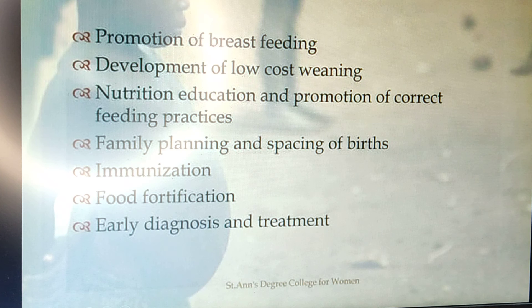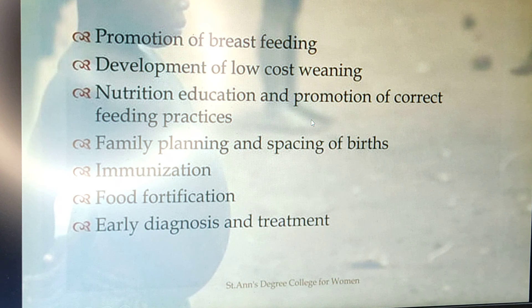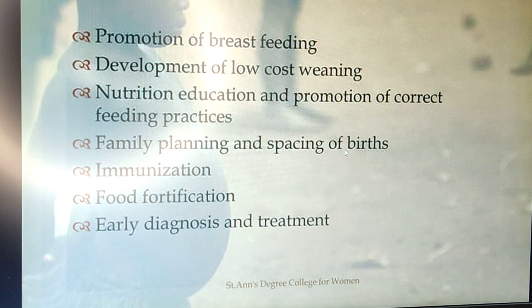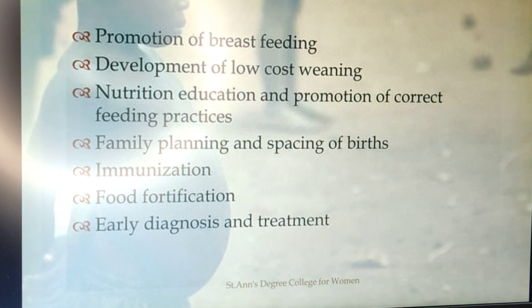The weaning diet should be low-cost, using food items available at home, which also provides good nutrition. Nutritional education should be given to family members, especially the mother and caretaker. Controlling infections through immunization, family planning, birth spacing of two to three years between pregnancies, food fortification, and early diagnosis and treatment are all important preventive measures for protein energy malnutrition.